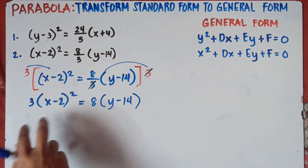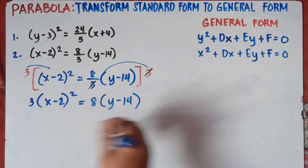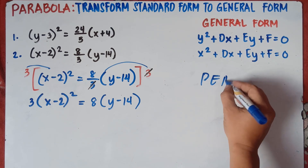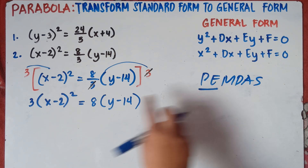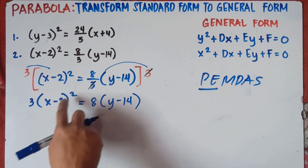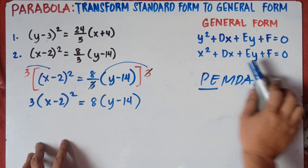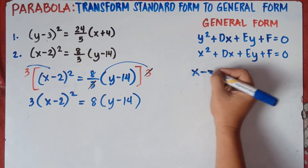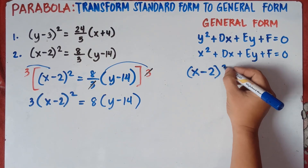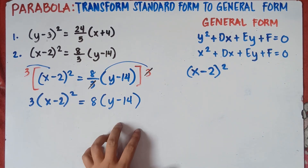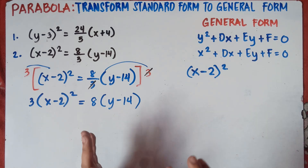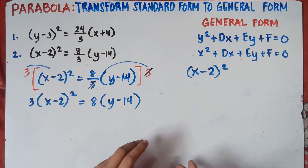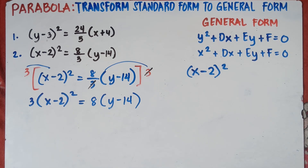Now you simplify. Do not multiply 3 into the quantity right away because we need to follow PEMDAS — parentheses and exponents come first before multiplication. So we simplify (x − 2)² first. You can use the FOIL method or the square binomial — it depends on which you prefer.